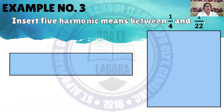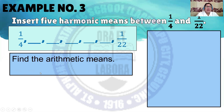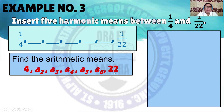Let us have another example. Insert 5 harmonic means between 1/4 and 1/22. This will be the form of the harmonic sequence: starting with 1/4, then insert 5 harmonic means, and the last term is 1/22. First, find the arithmetic means by looking at the denominators. The first term's denominator is 4, and the last term's denominator is 22, which is also the last term of the arithmetic sequence.